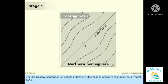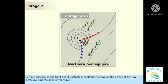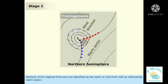The progressive separation of isobars indicates a decrease in pressure at a point on a frontal zone. A wave appears on the front, and if unstable, it continues to develop — the center of the low pressure is at the apex of the wave. The surface air circulation develops a typical anti-clockwise pattern in the northern hemisphere and creates an inward movement. Sections of the regional front are now identified as the warm or cold front, with an intervening warm sector. This process is called frontogenesis.